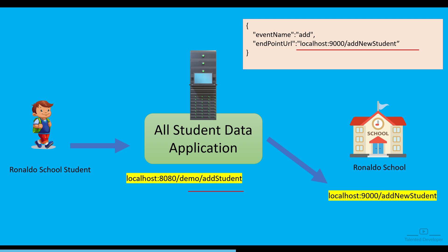Similarly, the student data application can provide different events like 'delete' and 'update'. If a Ronaldo school student tries to delete data, Ronaldo school can provide a different API endpoint and that response will go there immediately. Many schools can now set their own events and provide their specific URLs. No school needs to keep calling the student data application API anymore — they can relax knowing they have a webhook event set. And the student data application also benefits because it will no longer receive so many unwanted requests.